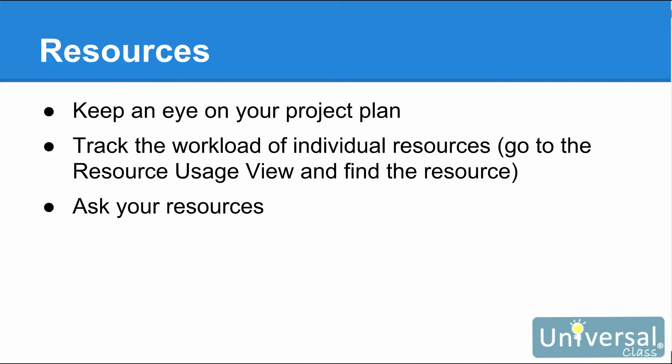There are three things you can do to make sure your resources are available and do not become over-allocated. You can keep an eye on your project plan by going to the resource graph view, where you can spot overbooking on tasks. You can track the workload of individual resources — take note of people who have put in a lot of overtime just to keep up with the schedule, as they may be over-allocated. To track resources, go to the resource usage view, select the resource you want to track, and the tasks assigned to that resource will be listed underneath. Ask your resources — take the time to ask them if everything is going okay. If someone is overworked or running behind, you can adjust the schedule or bring in other resources.